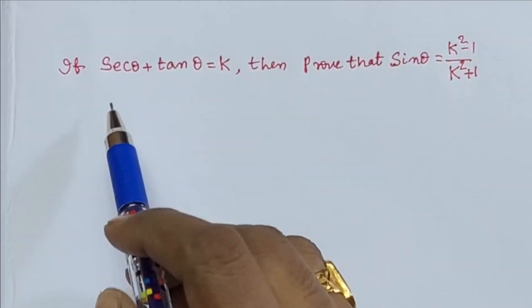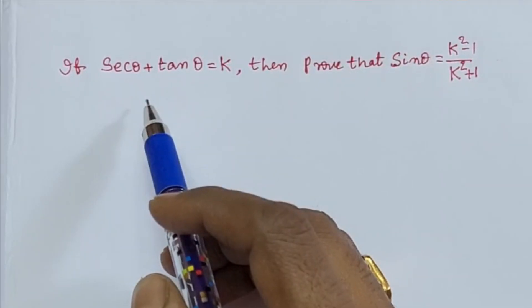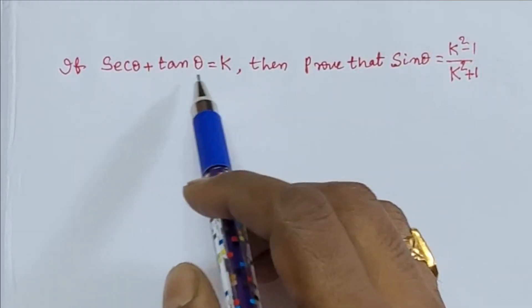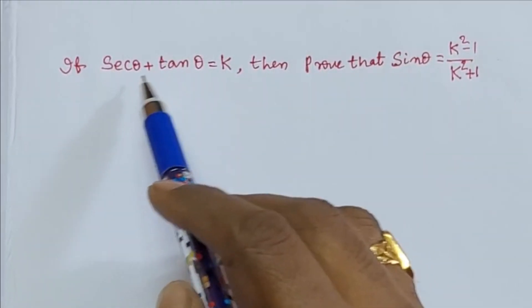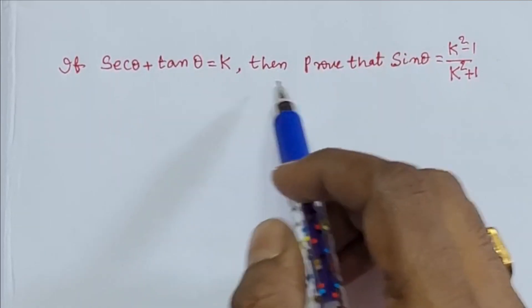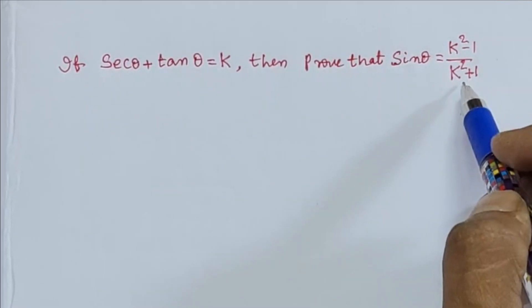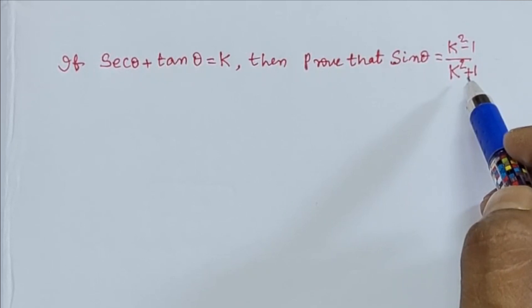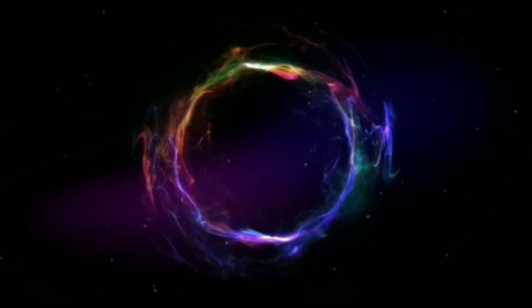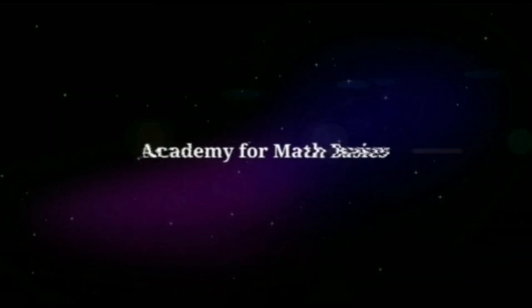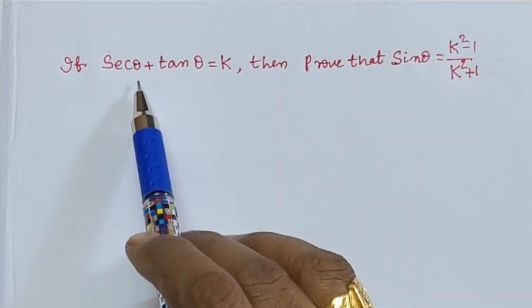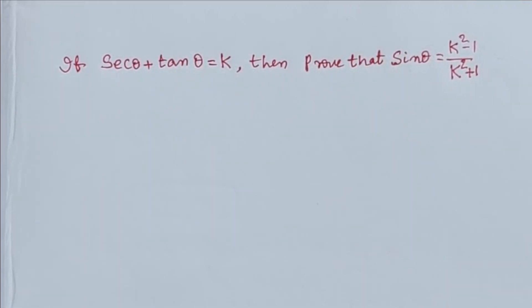Hello students, this is Madhubabu sir. In this video I am going to explain an important trigonometry question from the 10th class chapter: if secant theta plus tan theta equals k, then prove that sin theta equals k squared minus 1 by k squared plus 1. This is an important question given in public exams many times, so we should prepare this problem. Given condition: secant theta plus tan theta equals k.